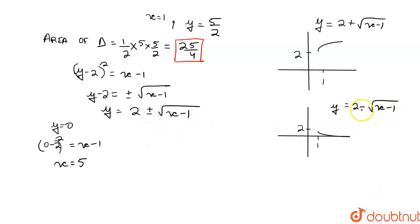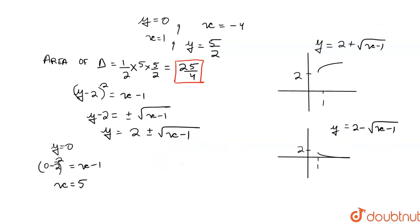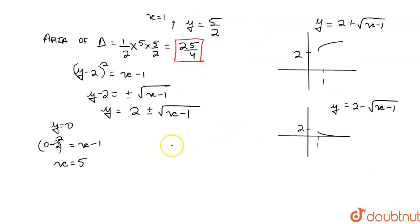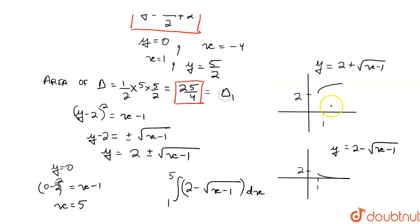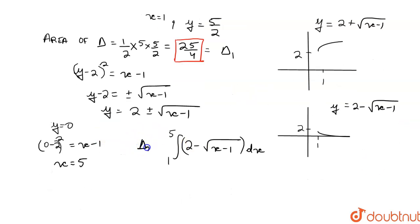Now we remove that area using integration. The integral for that region is the negative of ∫ from 1 to 5 of [2 − √(x−1)] dx. We call the triangle area Delta 1, this integral area Delta 2, and the remaining part Delta 3.